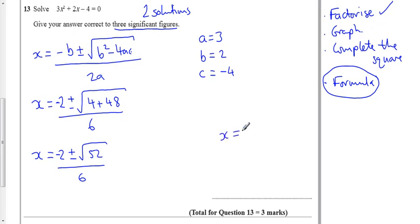So therefore x is equal to, taking the plus root gives you mine is 0.869 to 3 significant figures. Or x is, if I do the negative root minus the square root of 52, x is equal to minus 1.54, to 3 significant figures.